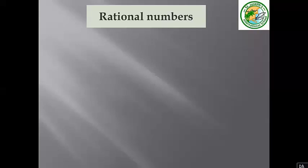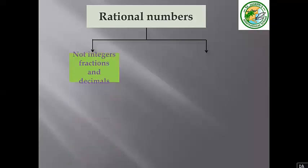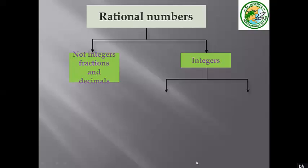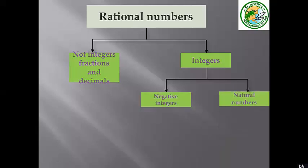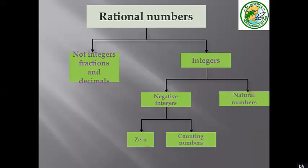We have a map to understand rational numbers. Rational numbers include fractions, decimals, and integers. Integers include negative integers and natural numbers starting from 0. Natural numbers start from 0, 1, 2, 3, and continue without ending. Negative integers are below zero, and counting numbers start from 1, 2, 3, and continue without ending.